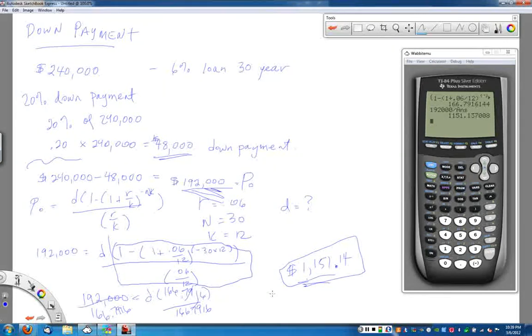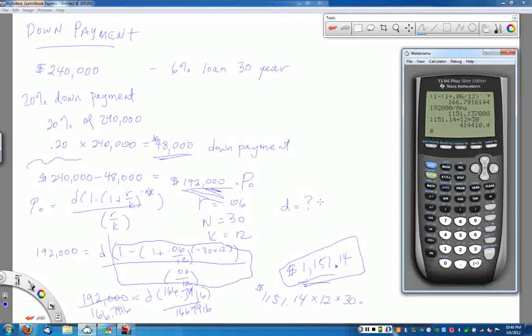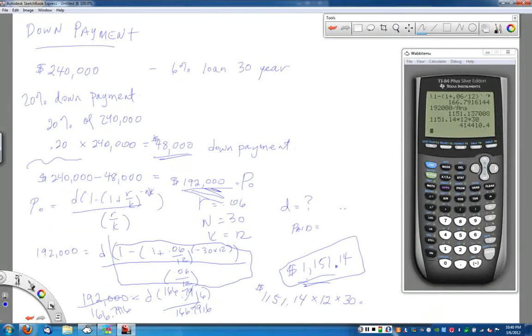If this is my monthly payment, $1,151.14, keep in mind that I'm going to pay this payment every month for 30 years. So if I want to figure out how much money I actually pay for this house, $1,151.14 times 12 times 30. What I'm actually paying for this house at the end of 30 years using 6% interest, what I actually paid for this house was $414,410.40.